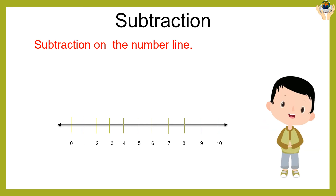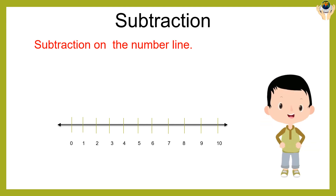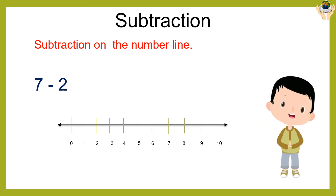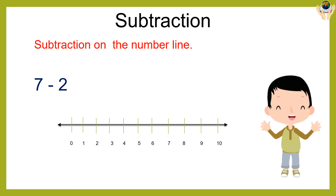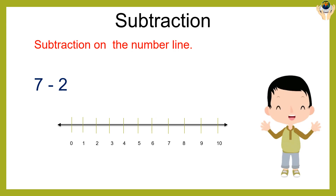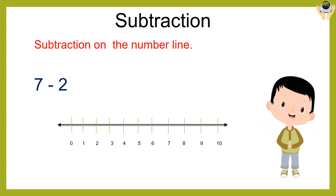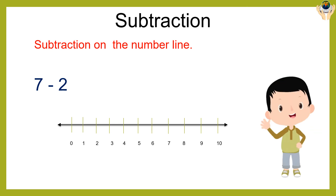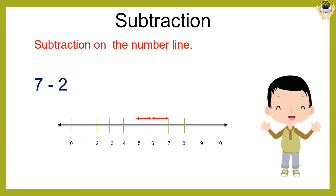Now we are going to do subtraction on the number line. Seven minus two is equal to what? Go to the number line. The bigger number is seven. Start reverse counting — how many numbers? Two. From seven, count back: six, five. The answer is five.